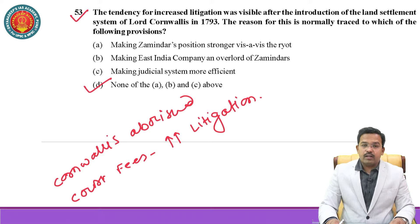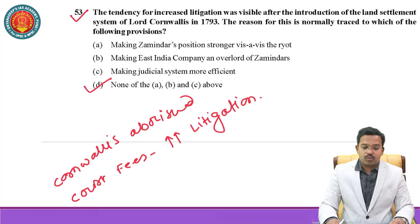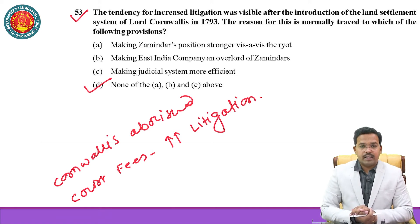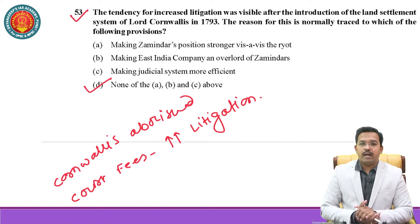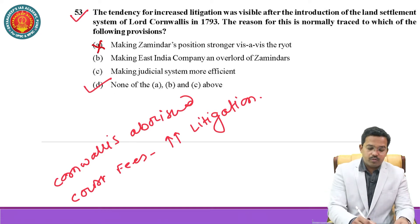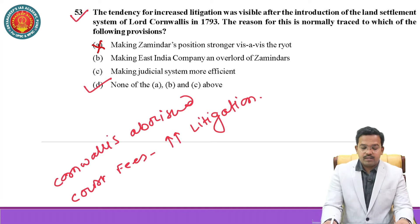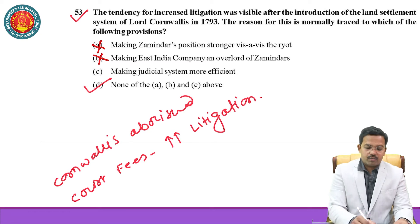The tendency for increased litigation was visible after the introduction of the land settlement system of Lord Cornwallis in 1793, also famous as the Cornwallis Code. The reason is normally traced to which of the following provision? First option — making Zamindars' position stronger vis-à-vis the ryots — means a ryot was not powerful enough to go for litigations against the Zamindar, so this option is mostly wrong. Second option — making the East India Company overlord of Zamindars — so Zamindars were also under pressure, making this the least preferable.